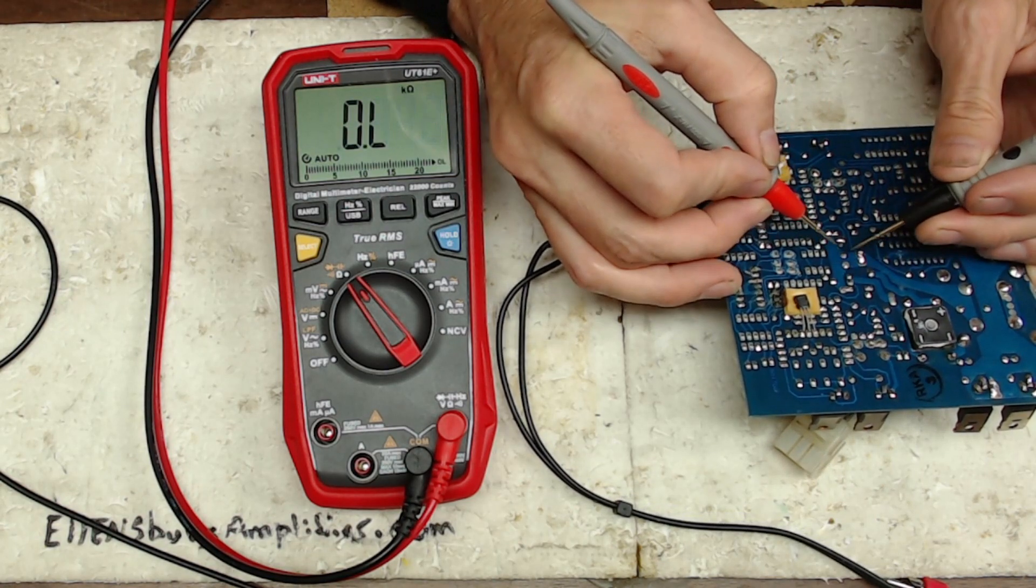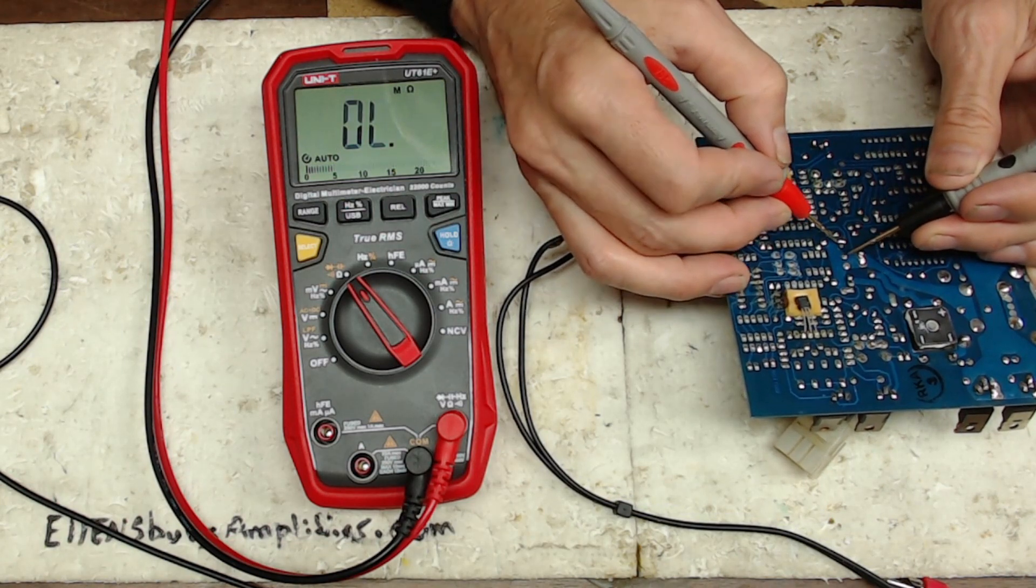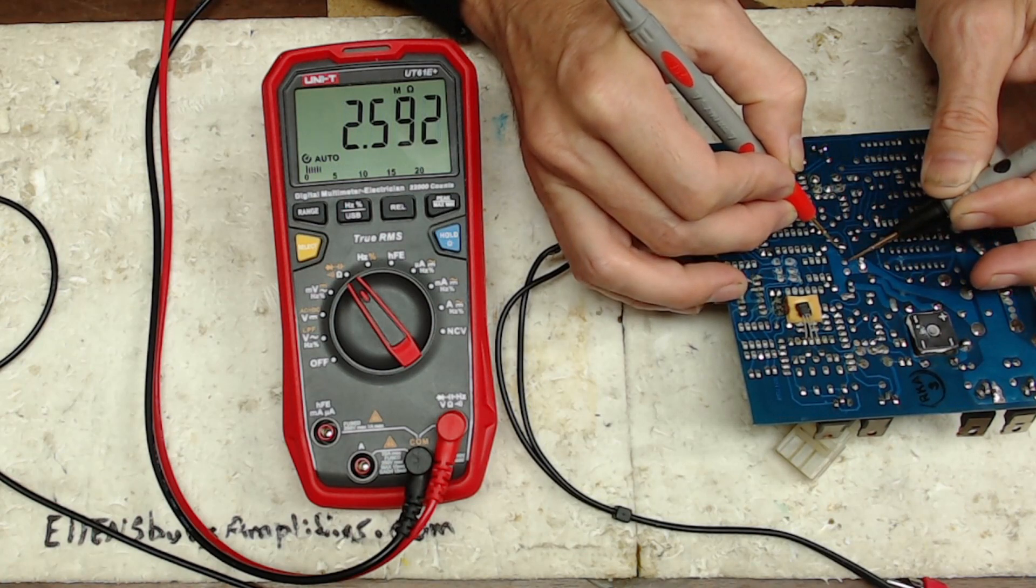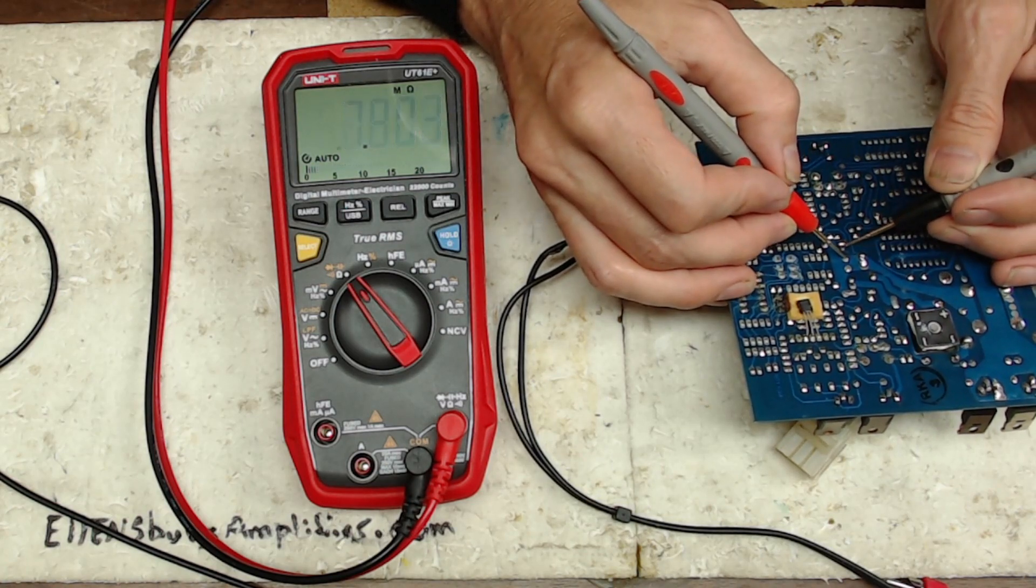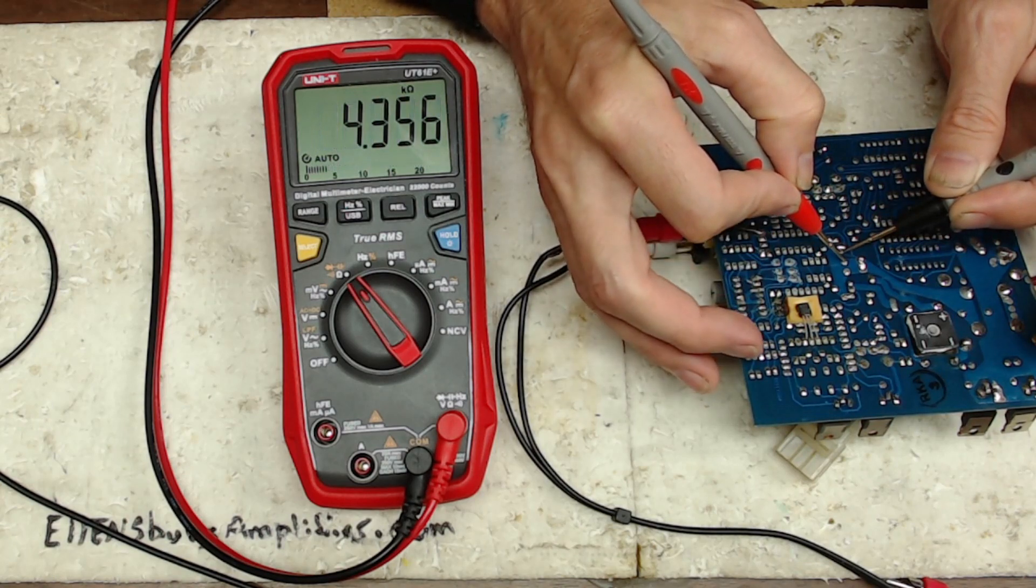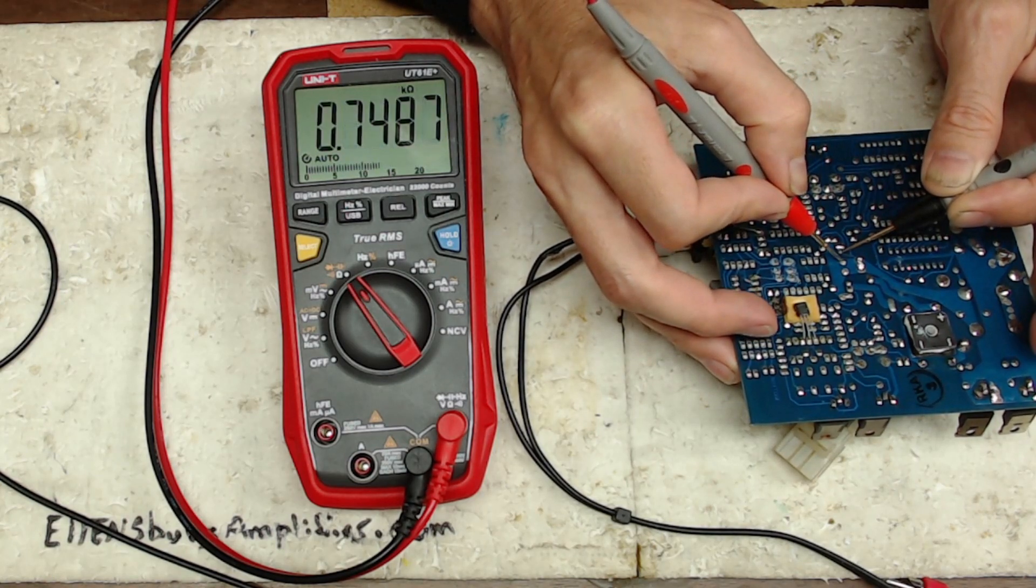So I'm suspecting this capacitor right here. 14 ohms on the negative rail capacitor, and then we have, well now our positive rail capacitor is charged so it's not showing. Let me see if I can reverse it here. There we go, so we're up in the 2 to 3K, 4K on the positive rail capacitor.